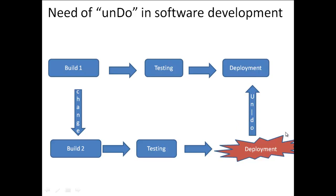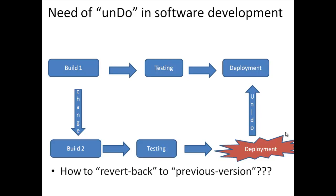If it's a small software, this can be managed manually by storing the build at some location and retrieving it. But if there are a hundred developers involved in implementing a feature in a huge project, then the real challenge comes when we need to undo any change. This is where a version control system comes into place — it lets us know how to revert back to a previous version. There are many version control tools available, but in this module we're going to talk about Git and GitHub.